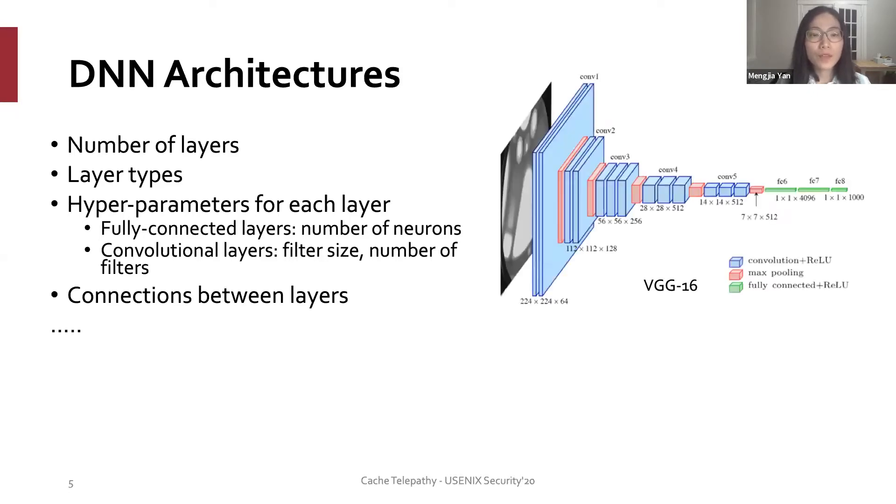For example, a VGG16 has 16 layers with a mixture of convolutional and fully connected layers. Those fully convolutional layers operate on very different filter sizes and number of filters. Given 16 layers, there could be 5 trillion possible architectures and a VGG16 is just one of them. Given the intractable search space, it is unfeasible to obtain the architecture via brute force search or guess.